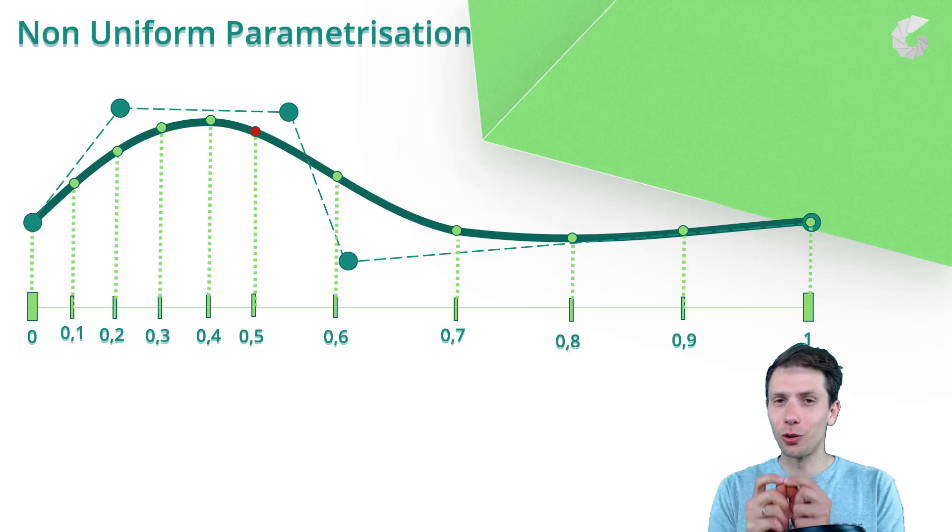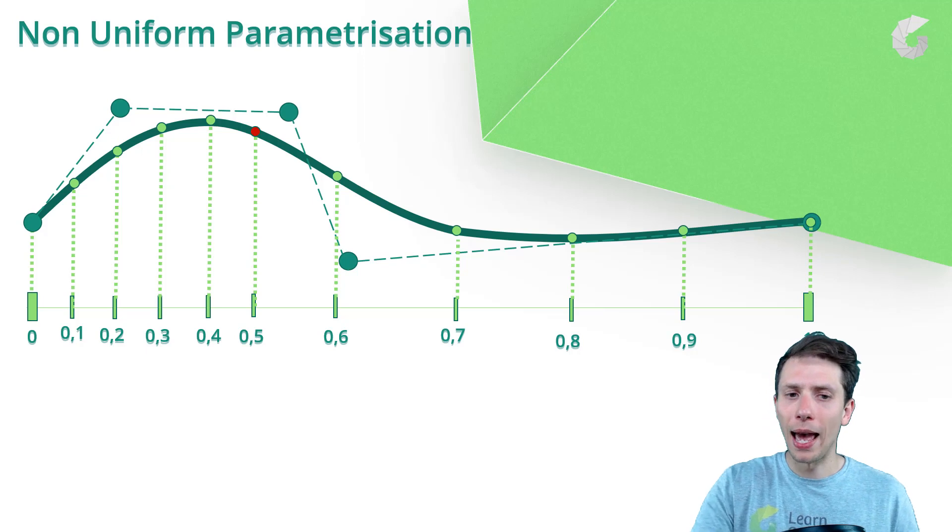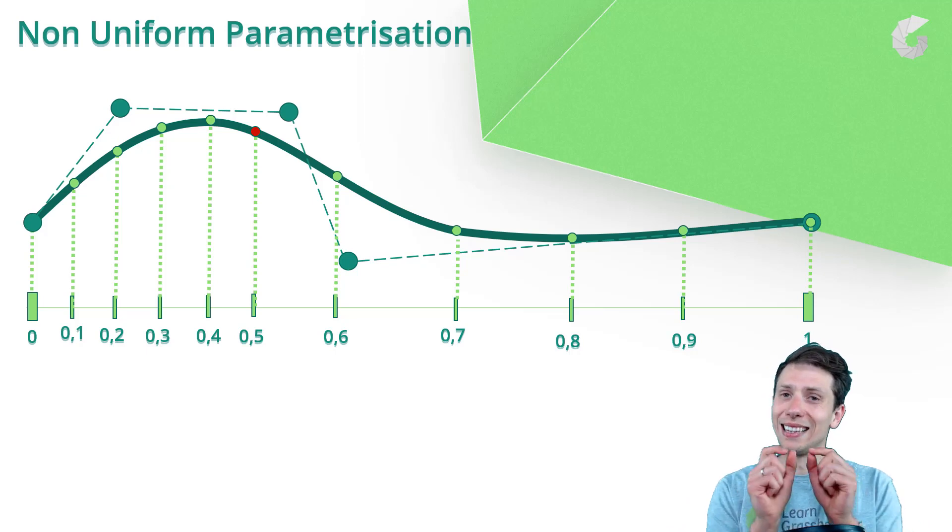As you can see in our example, Bob had to make a bicycle ride up to the hill and of course it took him much more time. The same is with non-uniform parametrization of the control points. The distance between control points defines how steep the slope is. So here it's not defining the length, it's not equal.